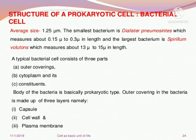So if you can see three coverings across a cell, you can call it a prokaryotic cell. And those three coverings are: capsule, cell wall, and plasma membrane.